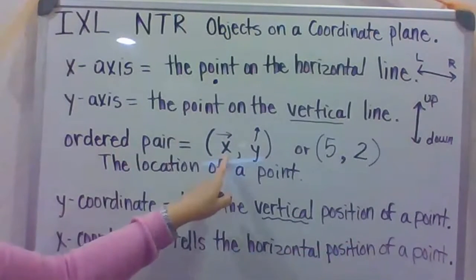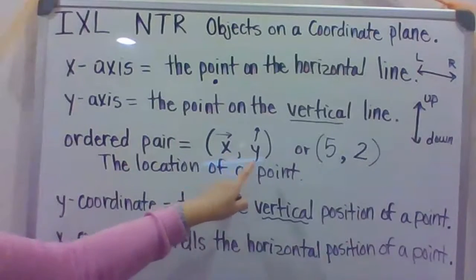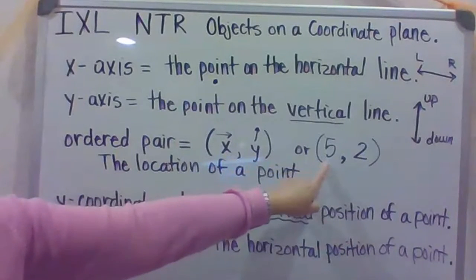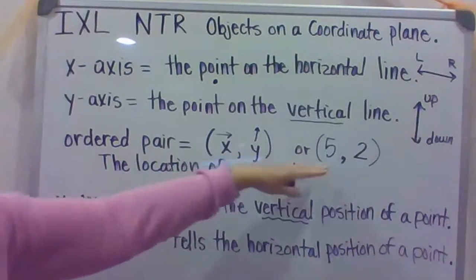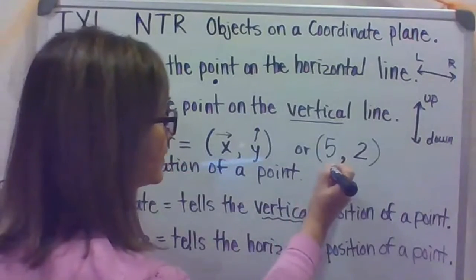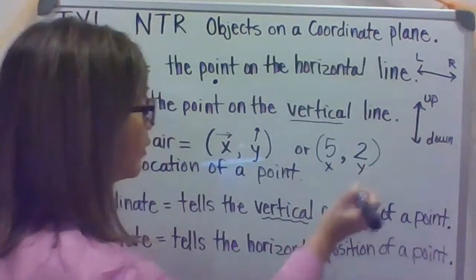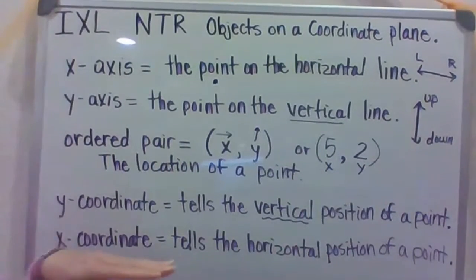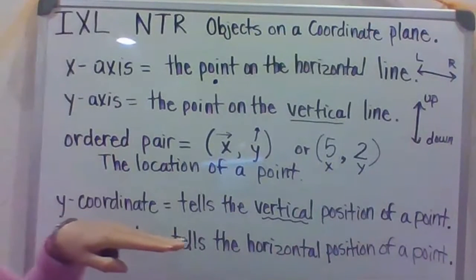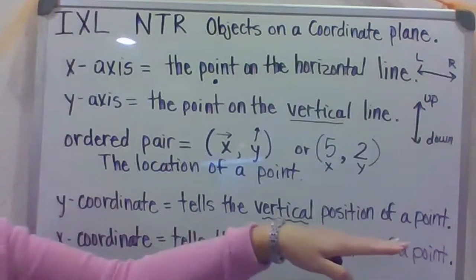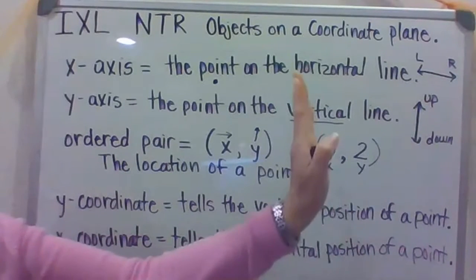So this is showing you how it will show the X and the Y, but then they're going to plug in a value, a number. So this means I will go over, this is your X value, X is always listed first, and this is your Y-coordinate. So that means on a coordinate plane, I'll go across to the 5, and then I'll go up 2.